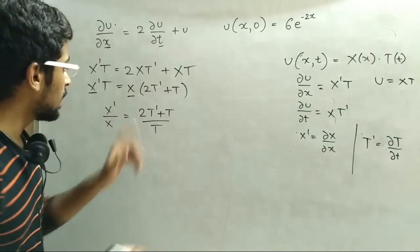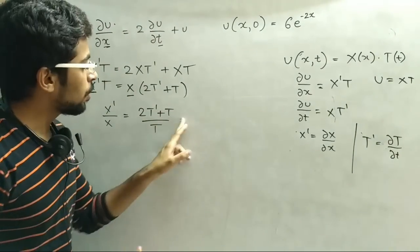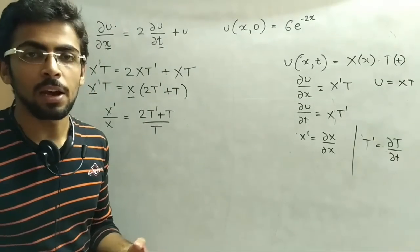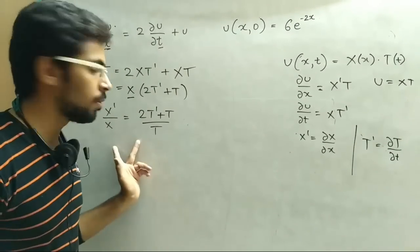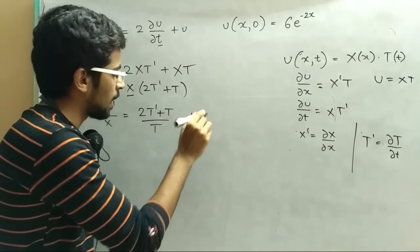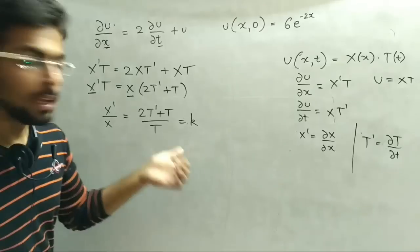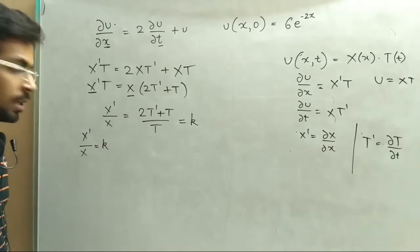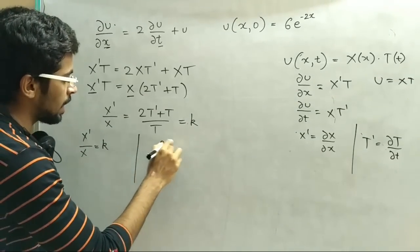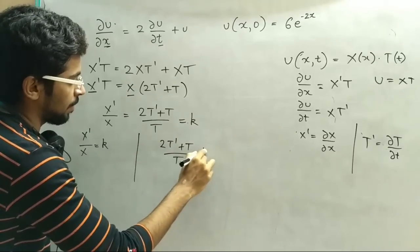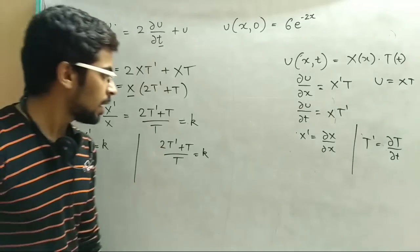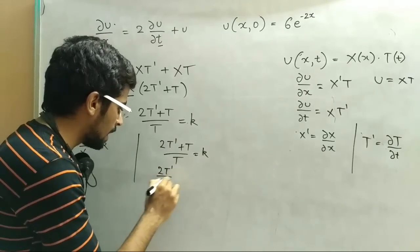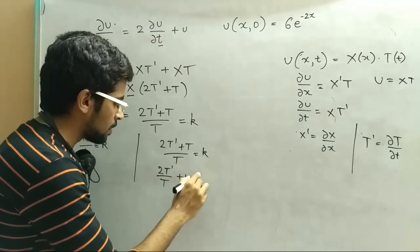So ab humaain kya karna hai - next step is: yeh dono ko equal rakhna hai. That means iska ek particular answer aayega - a constant answer - aur woh answer dono equal hoga. So let us consider that answer is k. So hum likh sakte hai X dash by X equals to k, and same way 2T dash plus T upon T equals to k. Simplifying: 2T dash by T plus 1 equals to k.